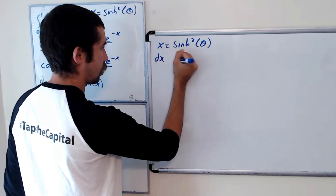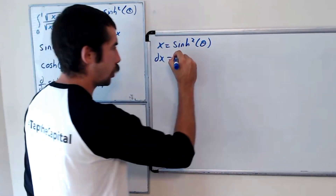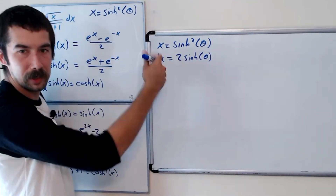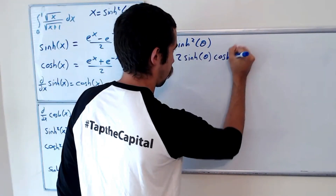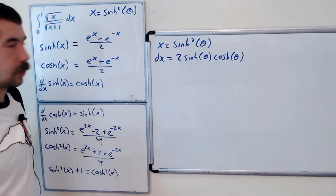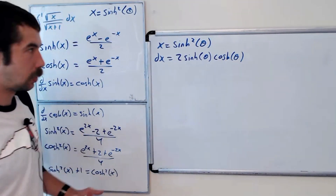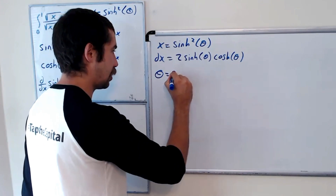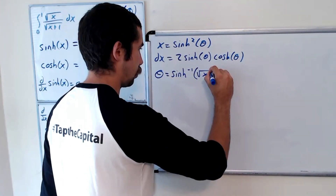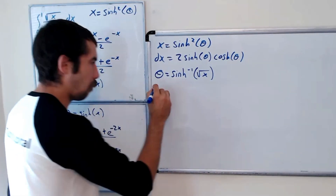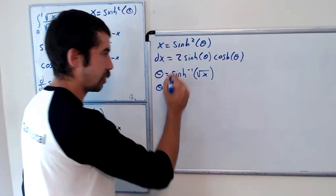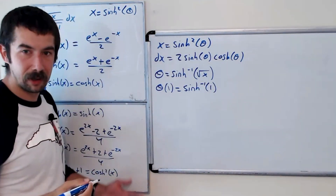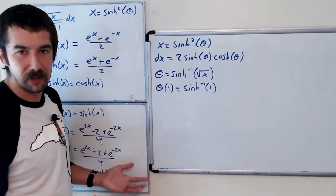Then dx equals 2 sinh(θ) cosh(θ) dθ by the chain rule. To find the new bounds, we solve for θ: theta equals sinh⁻¹(√x). The upper bound becomes sinh⁻¹(1), and the lower bound is sinh⁻¹(0), which equals 0.